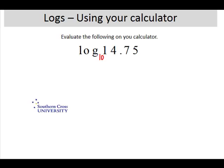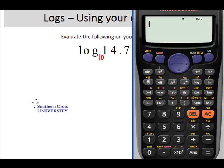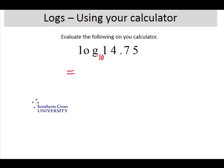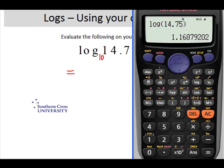On our calculator we'll just press log to get common log, and we're going the log of 14.75. Because that's the only number and we're not doing any operations, there's no need to close the brackets but it won't hurt if you do. So the answer is 1.1688 to four decimal places.